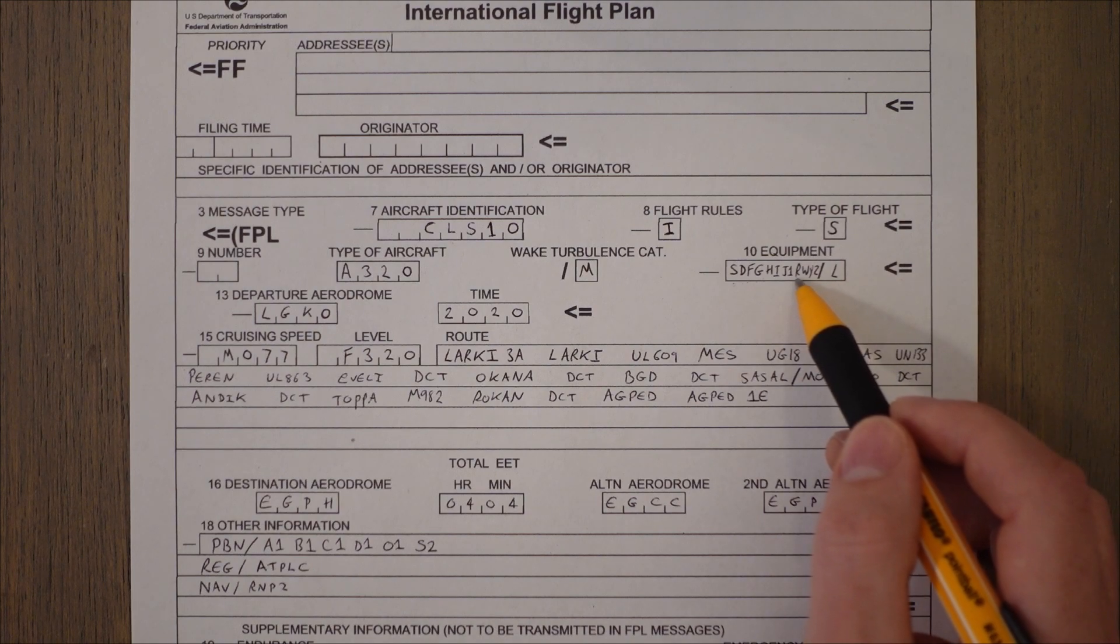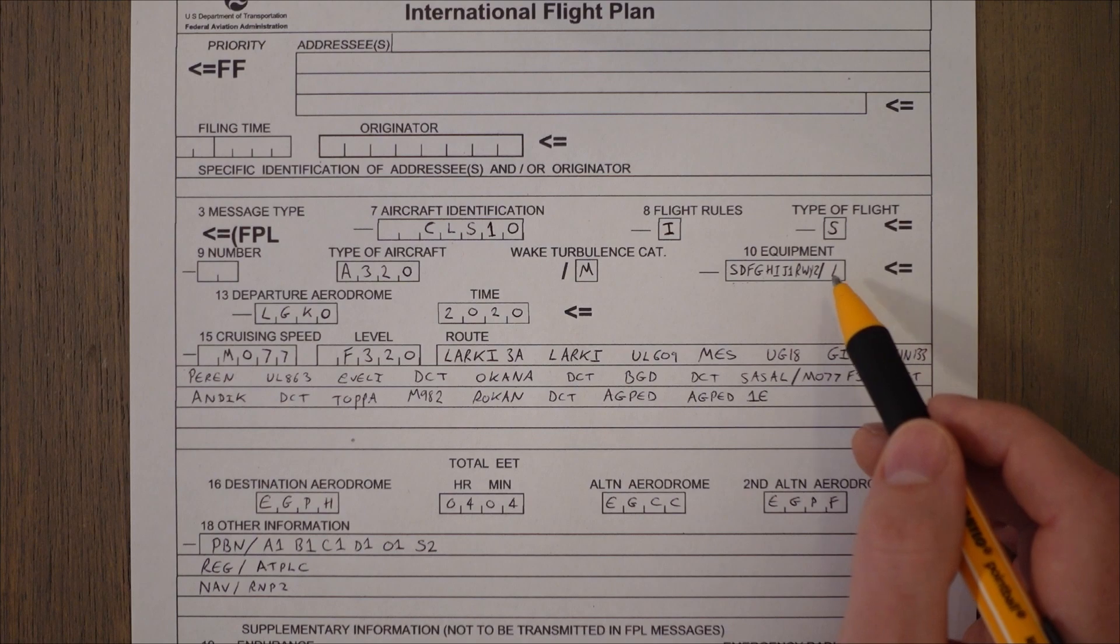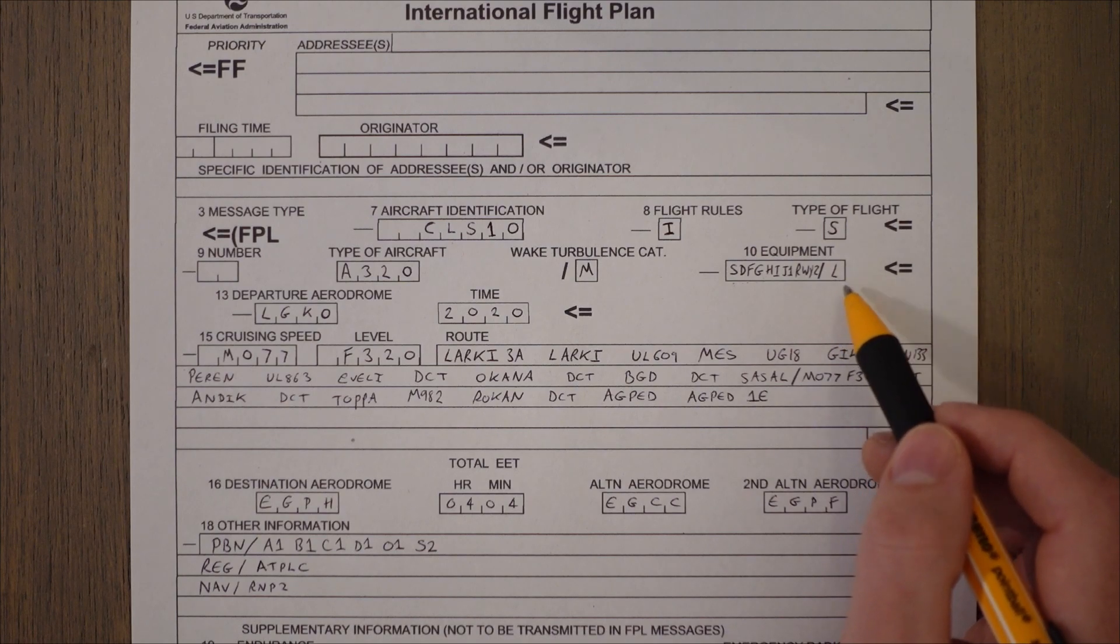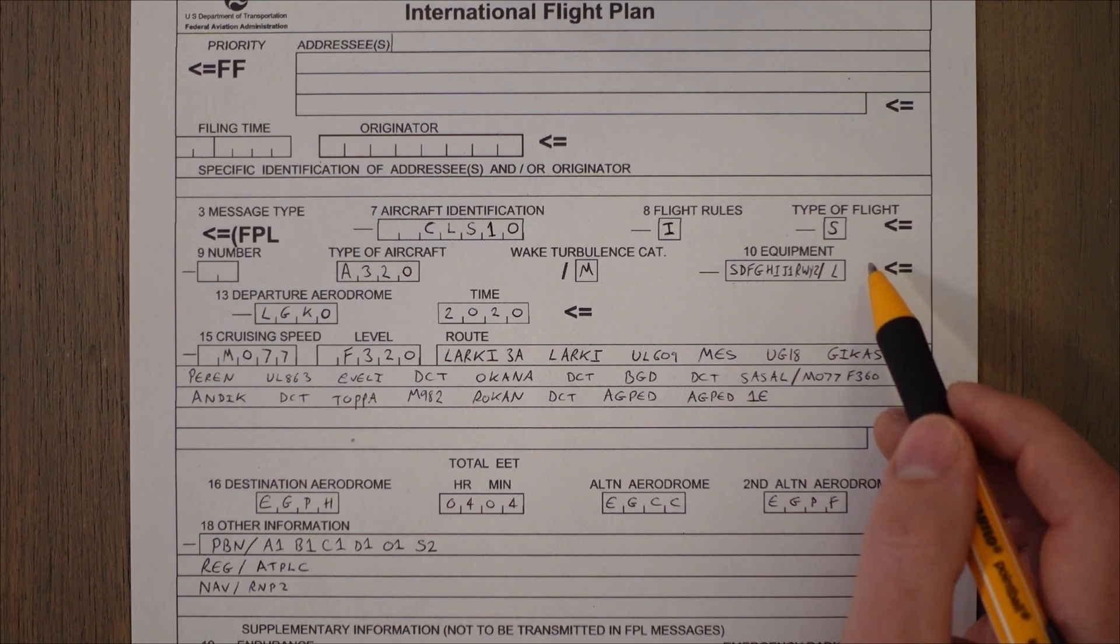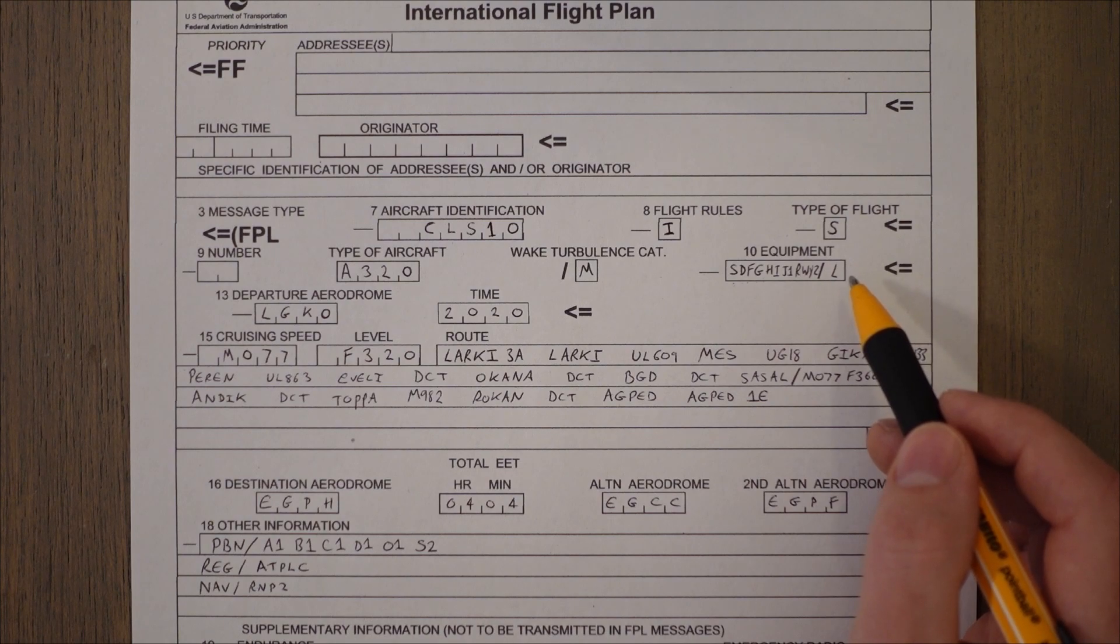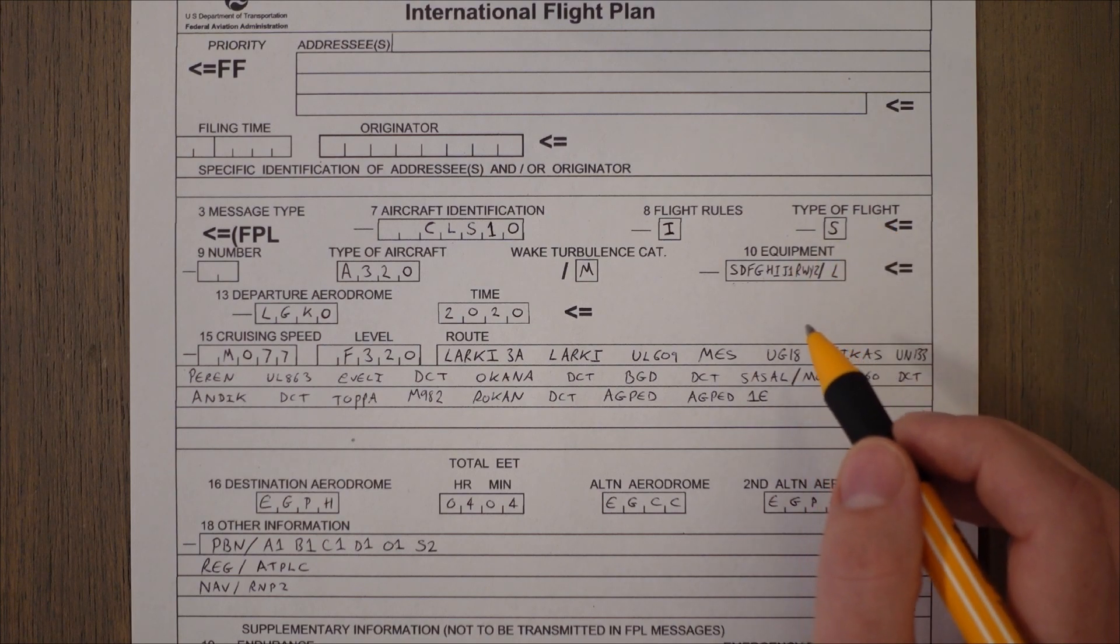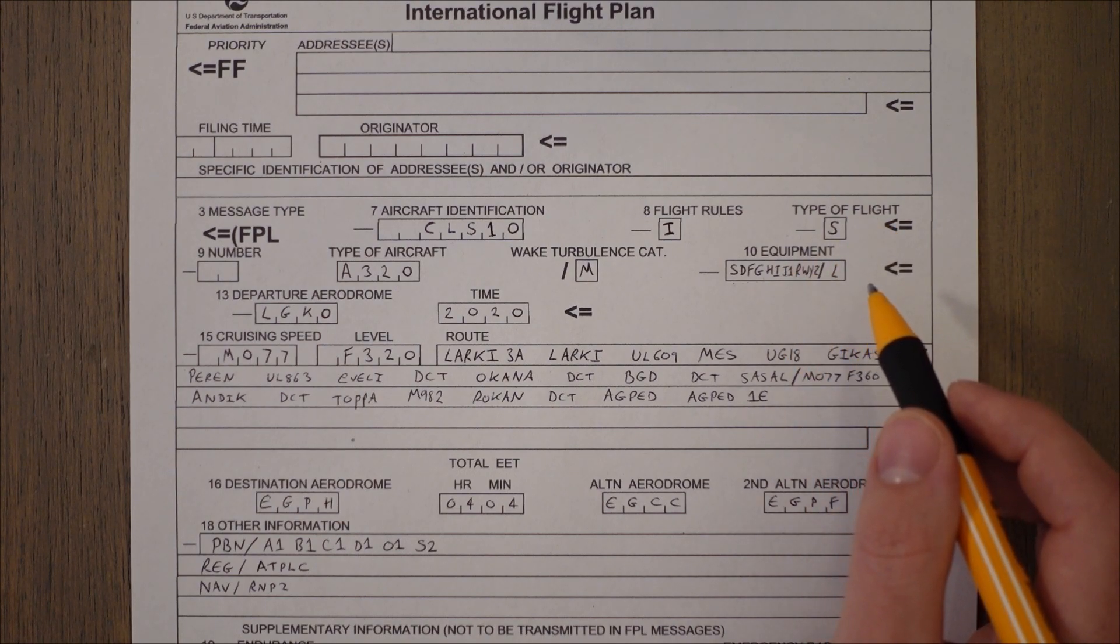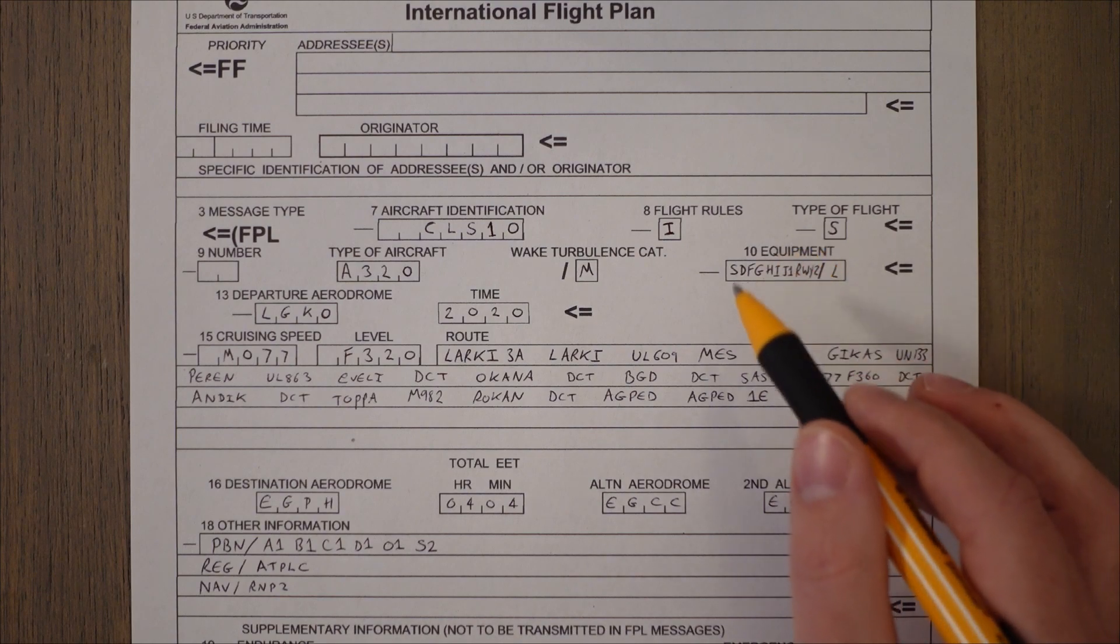So R says PBN but PBN has different ratings so we've written down Z to say we'll give more information on what PBN we can do. And then after the slash here we put in the transponder mode we have available. In our case L indicates mode S which includes aircraft identification, pressure altitude, and enhanced surveillance capability. It basically means that air traffic control can see us on radar pretty well. So the equipment's quite a big one. There's a lot of codes flying about, a lot of information I've just thrown at you. PBN, RVSM, CPDLC, all these acronyms.